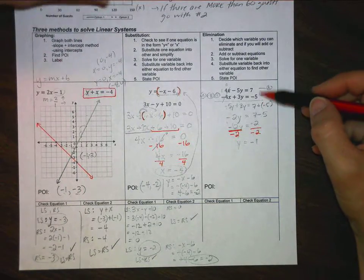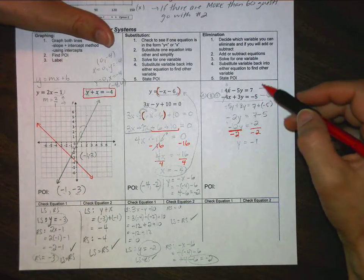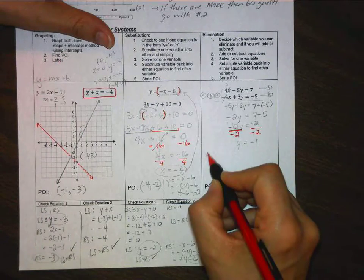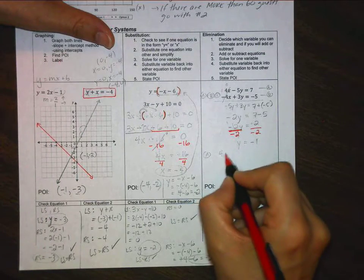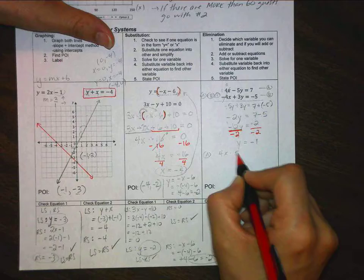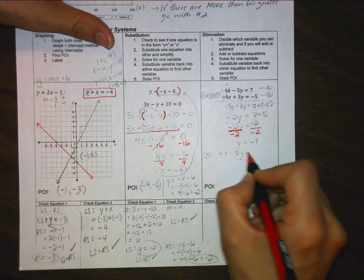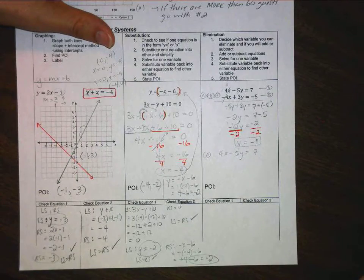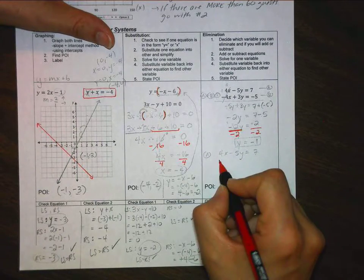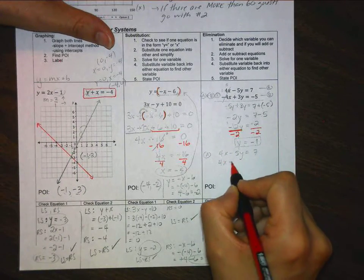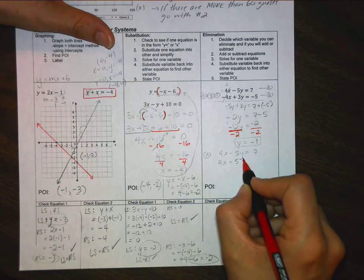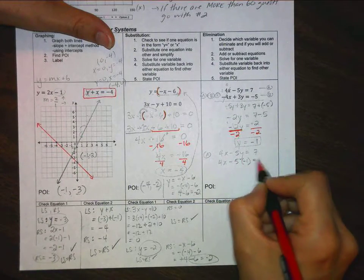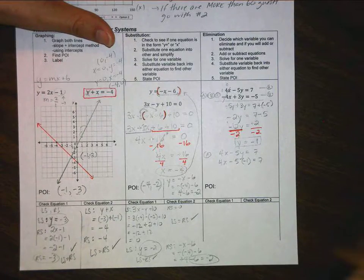Again, I can choose whichever equation I want, so I'm going to choose A. So I'm going to write it down: 4x minus 5y equals 7. And now I want to substitute in y is equal to negative 1. So I have 4x minus 5, but instead of y I'm writing negative 1, and then I write the 7.